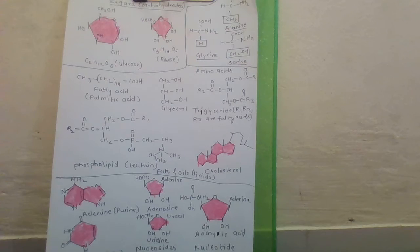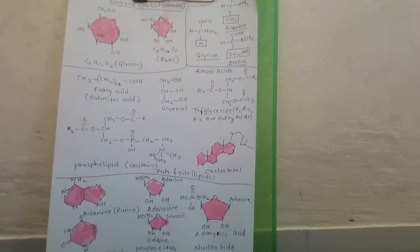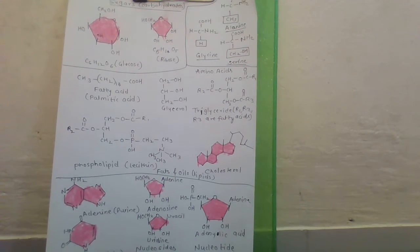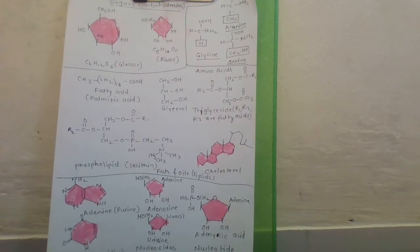These functional groups are hydrogen, carboxyl group, amino group and a variable group designated as R group. Based on the nature of R group there are many amino acids.